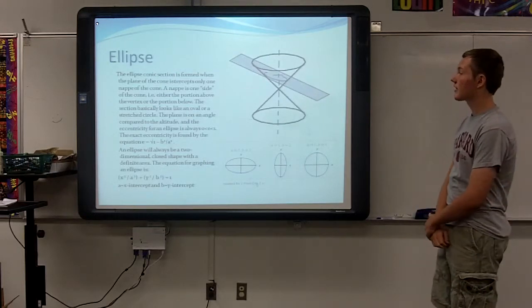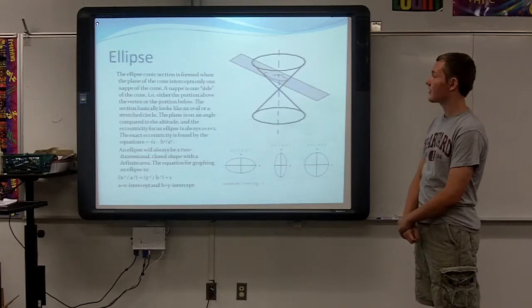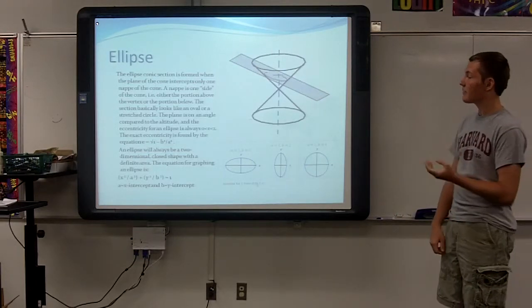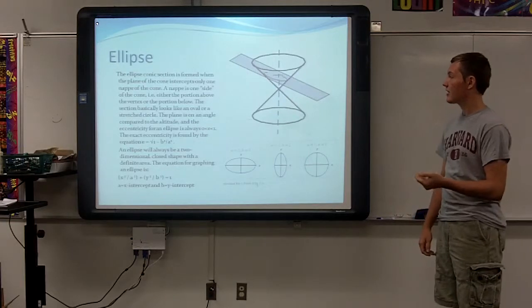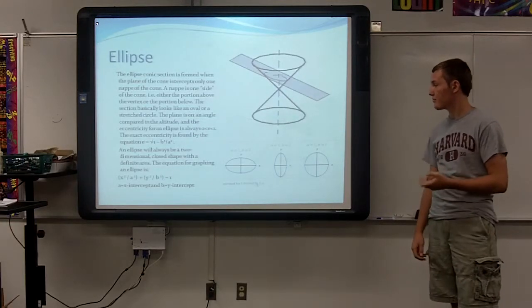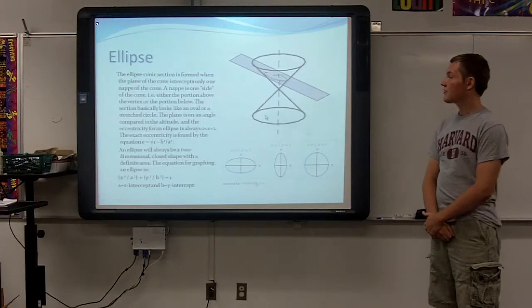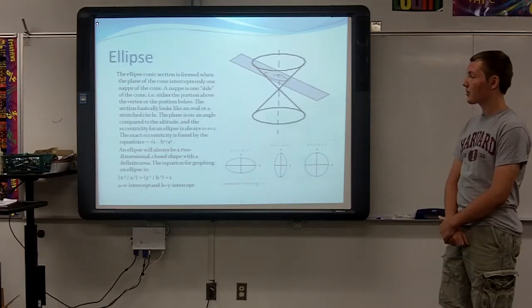An ellipse. The ellipse conic section is formed when the plane of a cone intercepts only one nappe of a cone. A nappe is one side of the cone, either the portion above the vertex or the portion below.